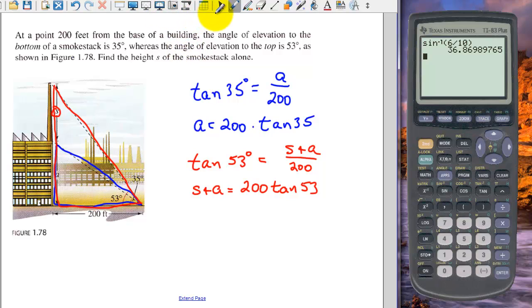And to get our final answer, to get S, we need to subtract A from both sides of the equation. But we can substitute this for A. So to compute our final answer, we are going to be taking 200 times the tangent of 53, and subtract from that 200 times the tangent of 35.